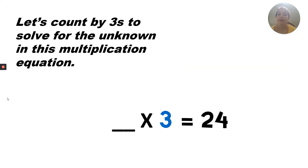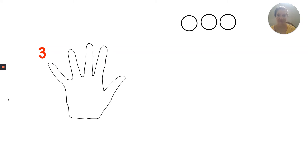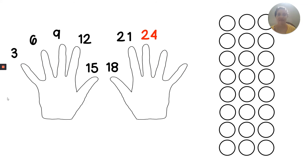Now let's count by threes to solve for the unknown in this multiplication equation: something times three equals 24. Counting by threes: three, six, nine, 12, 15, 18, 21, 24. As that relates to an array, there would be three in each group because we're counting by threes, and we counted eight times to get to 24. So there should be eight rows.